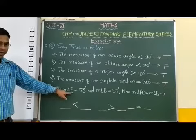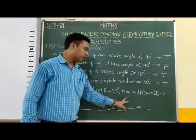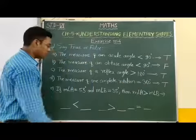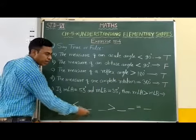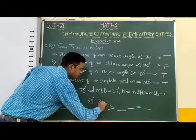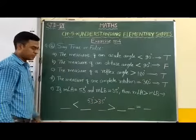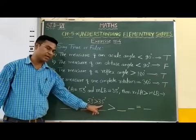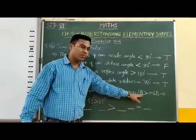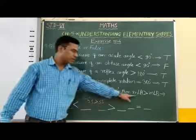Statement E: if the measure of angle A is equal to 53 degrees and the measure of angle B is equal to 35 degrees, then the measure of angle A is greater than the measure of angle B. Among these two angles, 53 is greater than 35. Therefore, we use the greater than symbol, meaning the left side part is greater and the right side part is smaller. So the given statement is true.